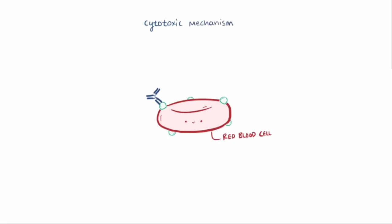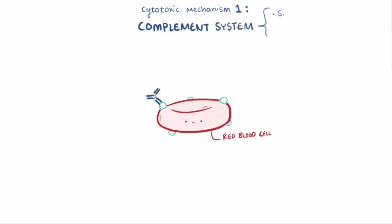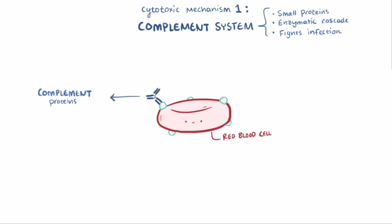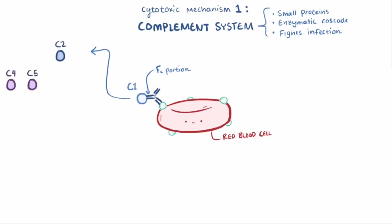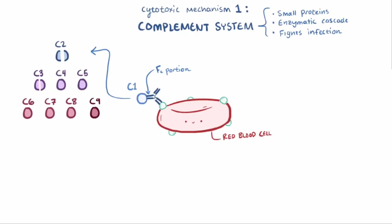The first cytotoxic mechanism of type 2 hypersensitivity is activation of the complement system. The complement system is a family of small proteins that work in an enzymatic cascade to fight off bacterial infections using a variety of mechanisms. In this case, the IgG or IgM antibodies activate complement proteins, which ultimately will kill the red blood cell bound to penicillin. The process gets started with C1, the first of the complement proteins, which binds to the Fc portion of the antibody. C1 then engages other members of the complement family, C2 through C9, some of which are activated by being cleaved or chopped by an enzyme.